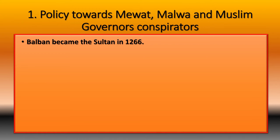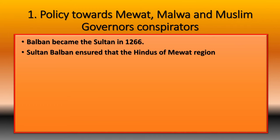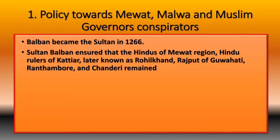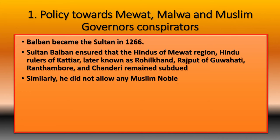As Sultan, Balban ensured that the Hindus of the Mevat region, Hindu rulers of Katihar — later known as Rohilkhand — and the Rajputs of Gwalior, Ranthambore, and Chanderi remained subdued. Similarly, he did not allow any Muslim noble to organize any conspiracy against the center.